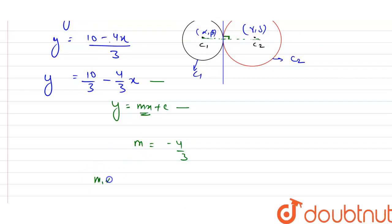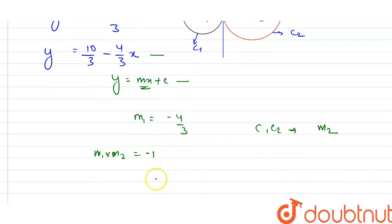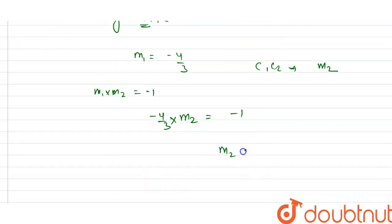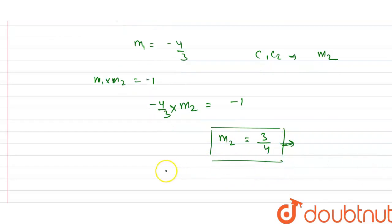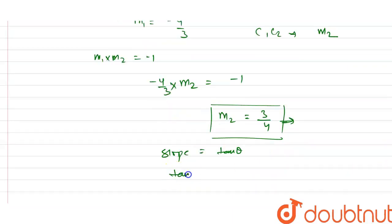यह line tangent के perpendicular होगी। हमें पता है कि अगर दो lines perpendicular होती हैं तो उनके slopes का product −1 होता है। C1C2 line का slope m2 है और tangent का slope m1 है। So, (−4/3) × m2 = −1, जिससे m2 = 3/4। इसका मतलब C1C2 को connect करने वाली line की slope है 3/4। Slope = tan θ, इसलिए tan θ = 3/4।